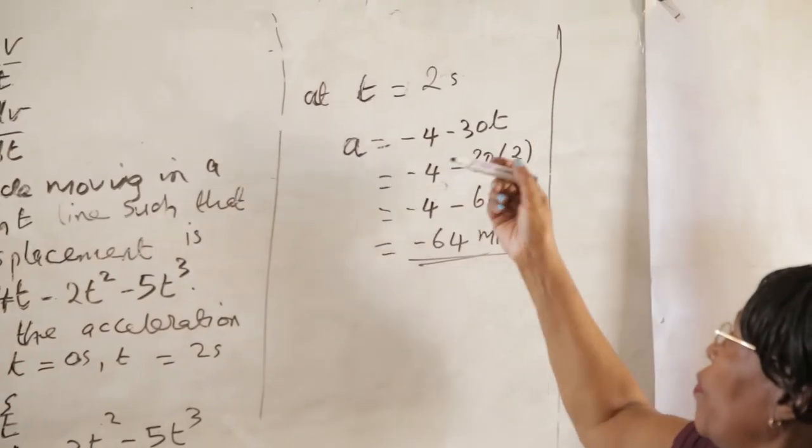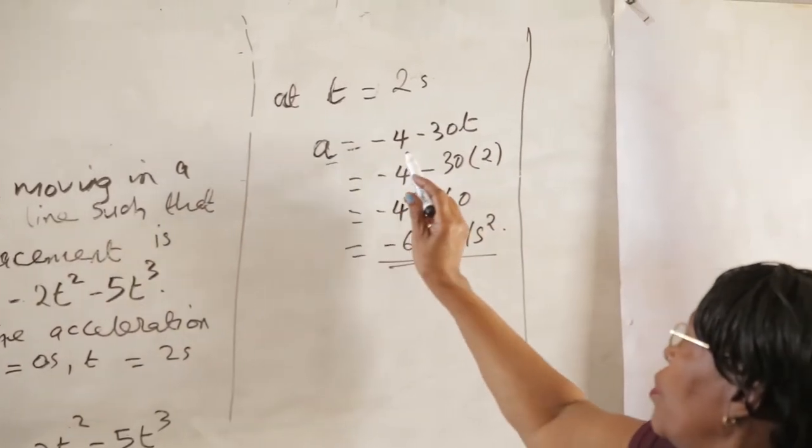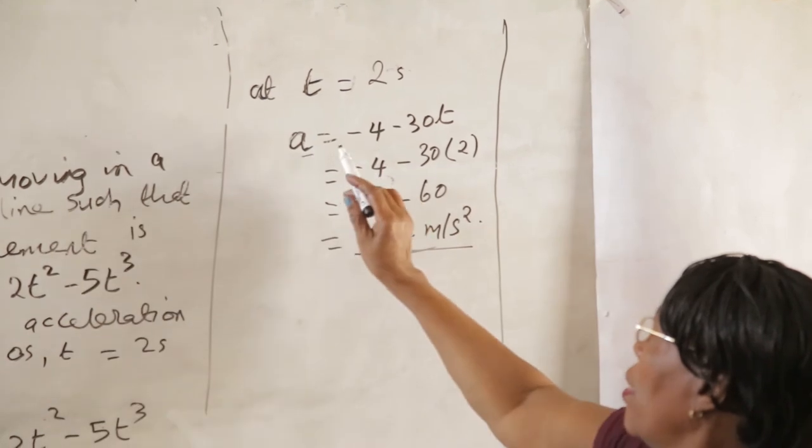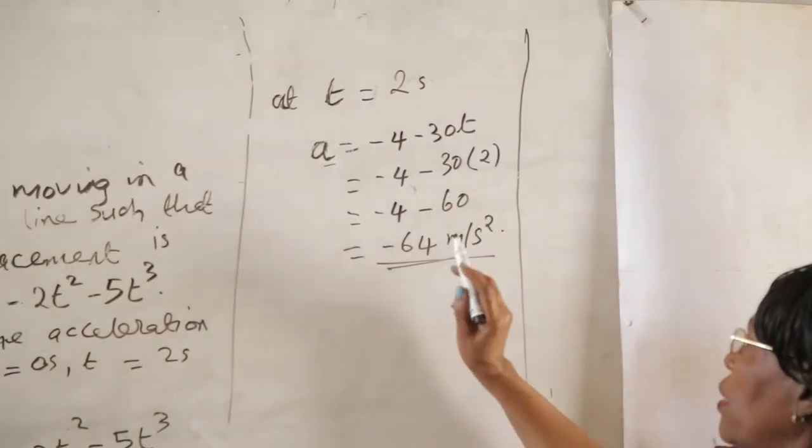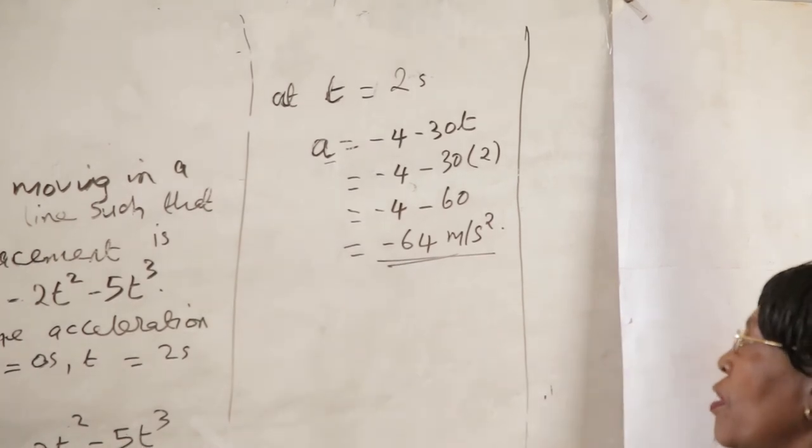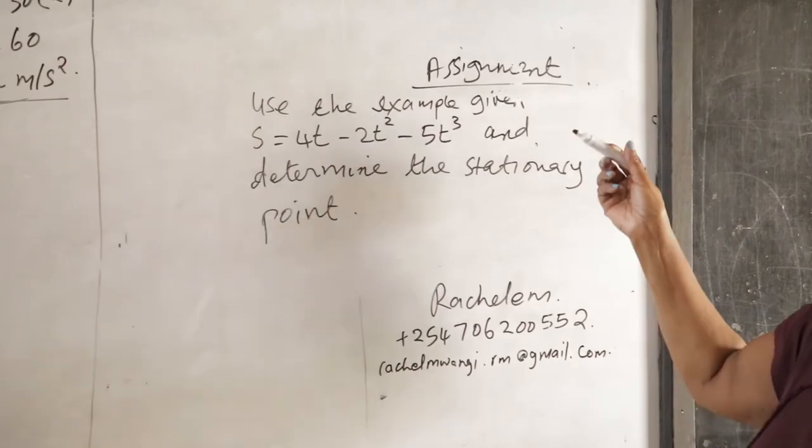When t is equal to 2, then A we substitute back into the equation, A is equal to minus 4 minus 30t, which is -4 minus 60 is equal to -64 meters per second squared.